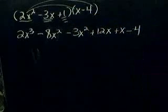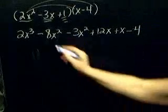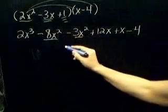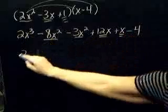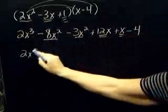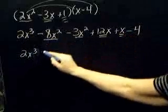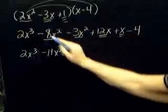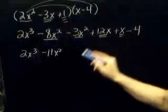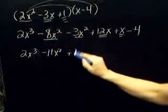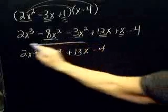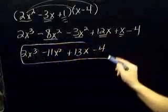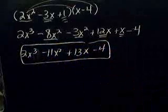Okay, now you're not done until you clean this up. You can see that there are some like terms here. Combining them, I'm going to have 2x to the third minus 11x squared, plus 13x minus 4. And that's all you can do to that problem, so you are finished.